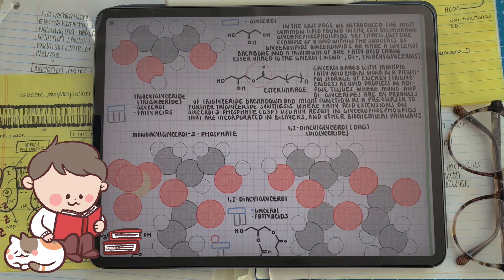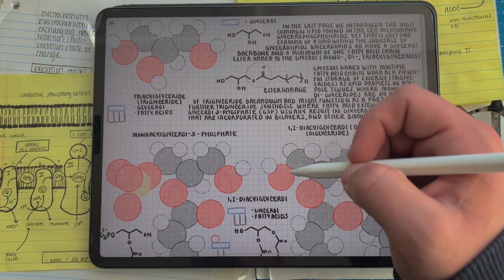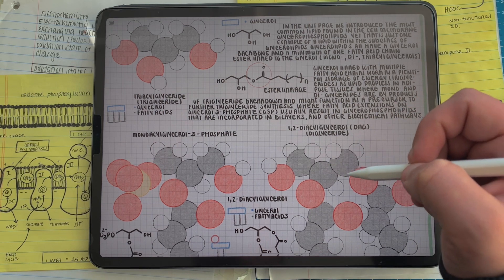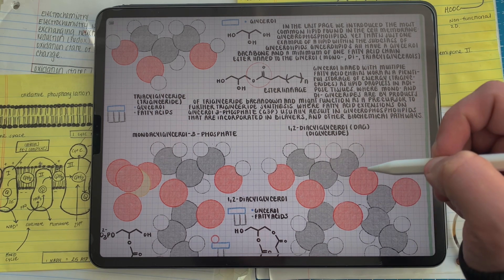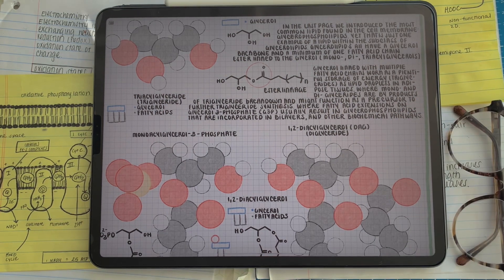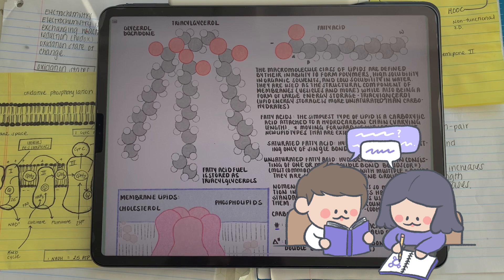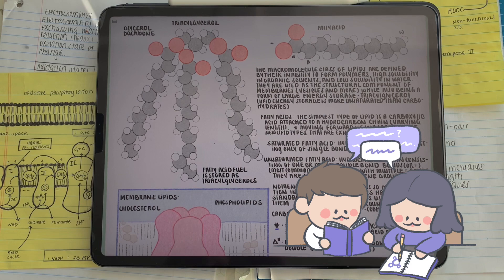A really common lipid is DAG that we see in the cell, and that is composed of two fatty acids bonded to the glycerol backbone. Glycerolipids that have a fatty acid attached to every single one of the three positions on the glycerol are triglycerides, and they are a glycerolipid that's used for fat storage.